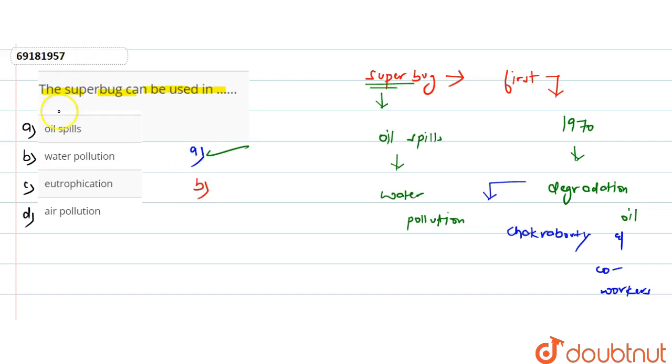Next is that they can help in water pollution. There are many reasons for water pollution, but we can mainly use the superbug in oil spills. So, this option is also incorrect.